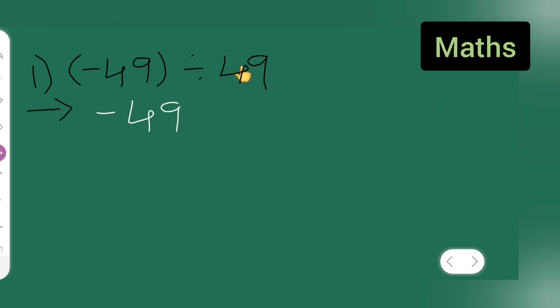And then what you'll have to do is you'll have to take the reciprocal of this number. Reciprocal means put multiply sign, multiply it by 1 upon 49. So it is 1 upon 49.